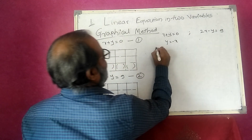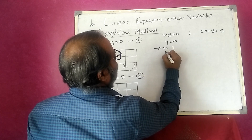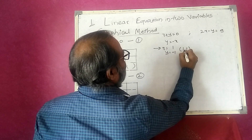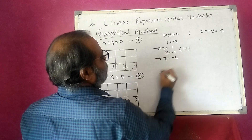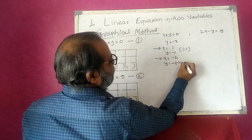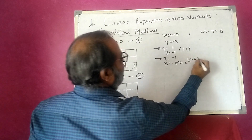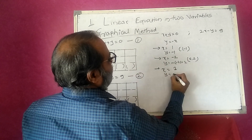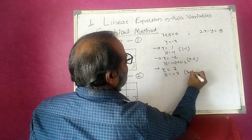For the first equation, y is equal to minus x. Taking x equal to 1, y is equal to minus 1, so the coordinate is (1, -1). Taking x equal to minus 2, y is equal to minus of minus 2, which is 2, so the coordinate is (-2, 2). Taking x equal to 3, y is equal to minus 3, so the coordinate is (3, -3).